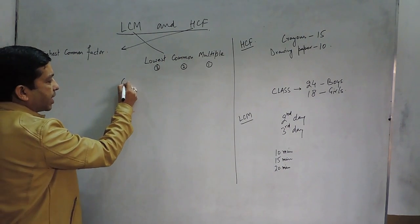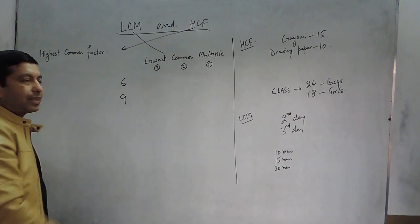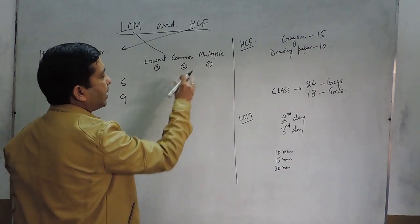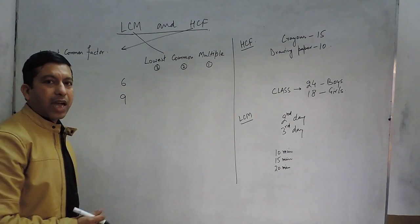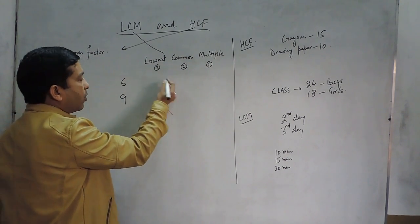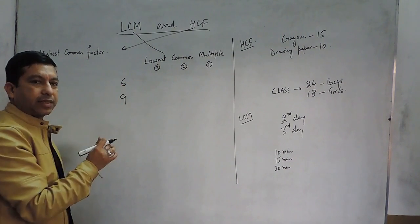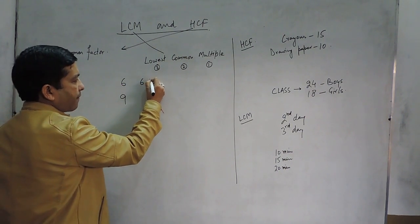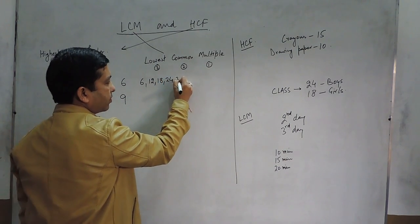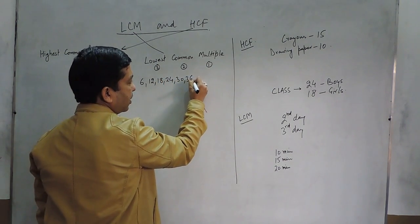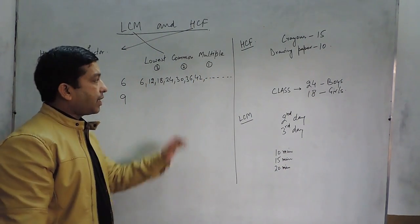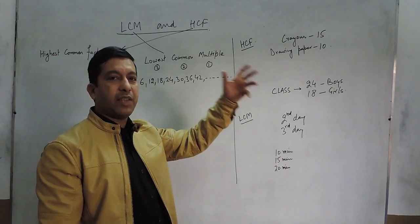If we take an example of the two numbers 6 and 9 — we look at what exactly the multiples are. Multiples are basically the numbers which come in the table of 6: like 6, 12, 18, 24, 30, 36, 42, and so on. This goes up to infinity.